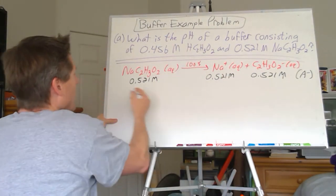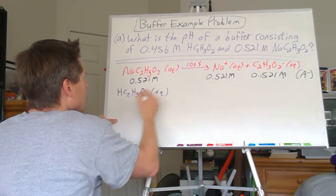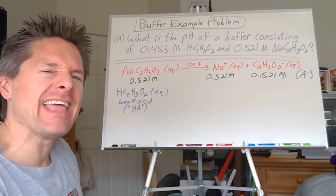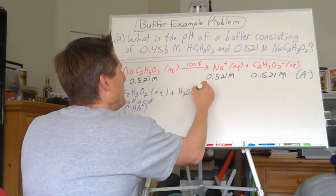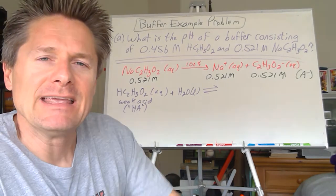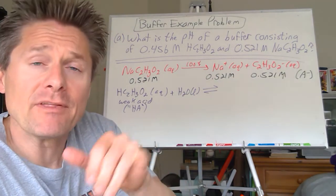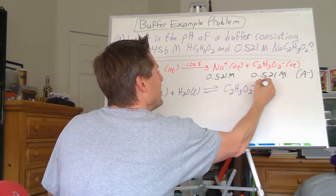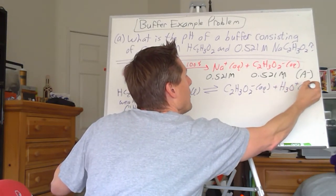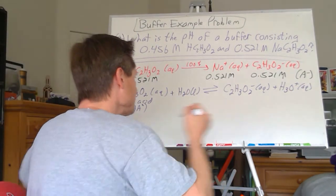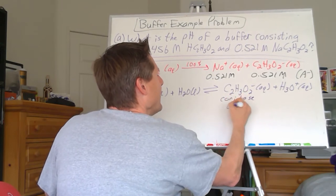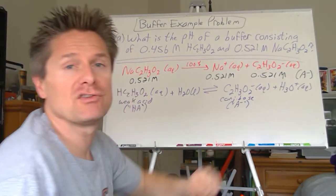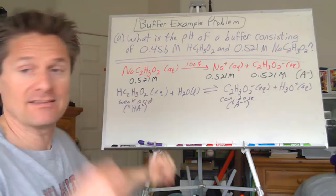We've got our weak acid HC₂H₃O₂ — that's the HA in Henderson-Hasselbach. This ionizes in water. In a buffer, you've got a weak acid and its conjugate base in equilibrium at roughly the same concentrations. This acid donates its proton to water, leaving the acetate ion (the conjugate base, our A⁻) plus hydronium. We need the concentration of HA, the concentration of A⁻, and the Ka for this weak acid.